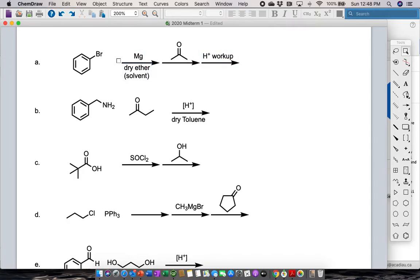So what's going on here? In the first arrow, we just see magnesium, and I told you dry ether and solvent. Hopefully that kicks you in to think about what we're doing here is making a Grignard.